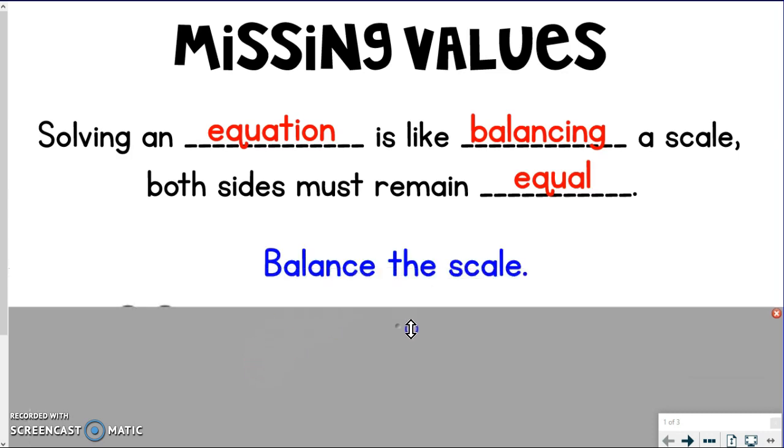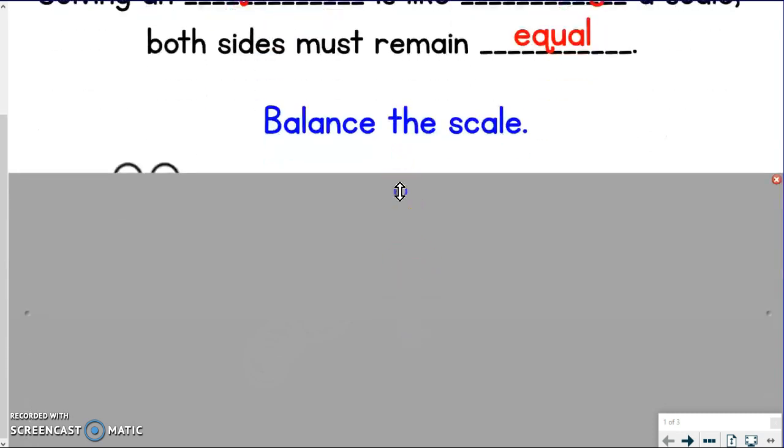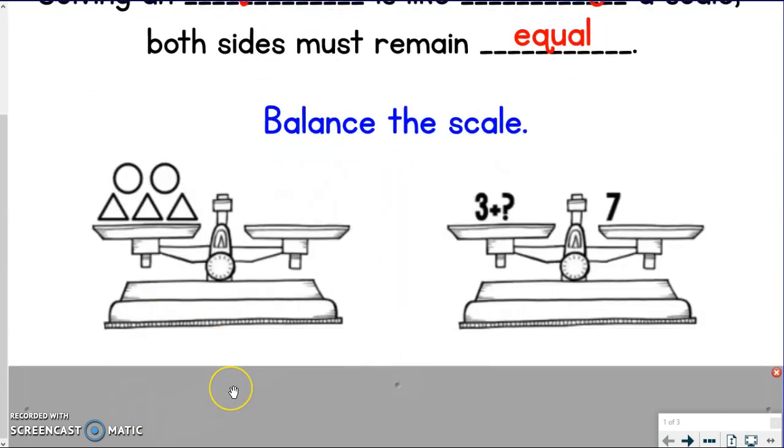Let's take a visual and balance this scale. Let's focus on the one on the left because it's much easier with something very concrete versus more abstract with numbers. If I wanted to balance this scale, right now I have two circles and three triangles on the left and nothing on the right. So if I need to balance that, I need to add the exact same thing.